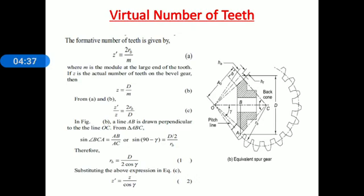Now, knowing how to find the number of teeth: in the case of a spur gear, we know the definition of module — pitch circle diameter divided by number of teeth — so number of teeth z equals pitch circle diameter divided by module. Similarly here, z-dash is the number of teeth on a virtual or formative spur gear, equal to 2rb divided by module. We consider this as equation A: z-dash = 2r_b / m.